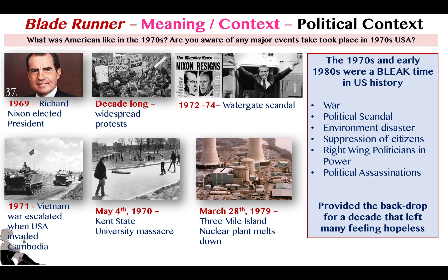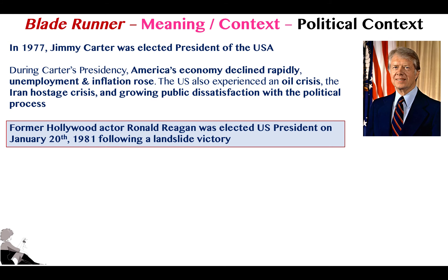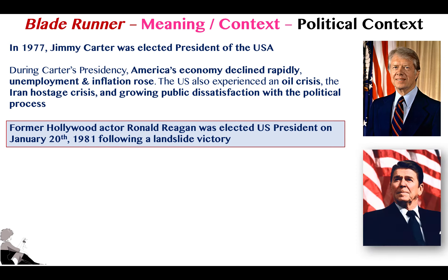In the 1970s it was a very bleak decade in America. As we move into the 80s, America was coming off the back of war, political scandal, environmental disaster, suppression of citizens' rights, right-wing politicians gaining power, and political assassination. Under Nixon, and then Jimmy Carter, who was an idealist, it led to a declining American economy, unemployment, inflation, hostage crises, and a growing sense of dissatisfaction with politicians and the political system.